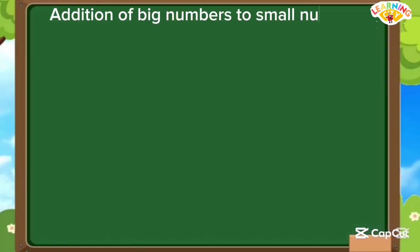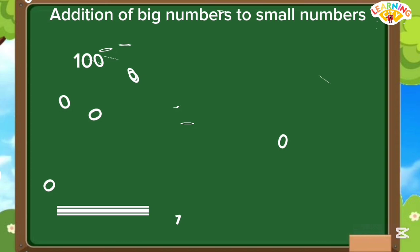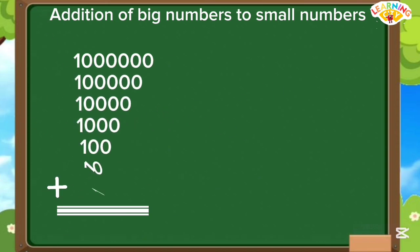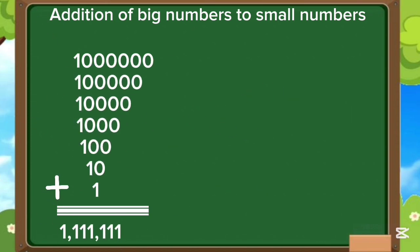Addition of big numbers to small numbers. 1 million plus 100,000 plus 10,000 plus 1,000 plus 100 plus 10 plus 1 is equals to 1,111,111.